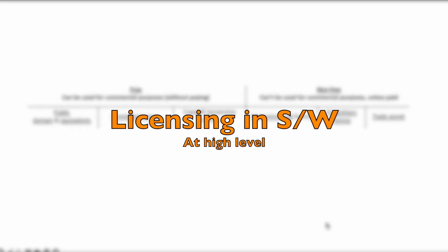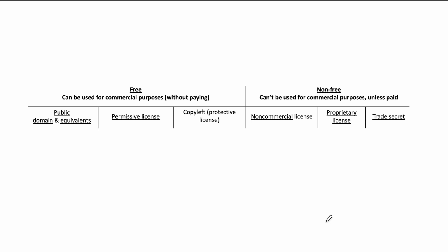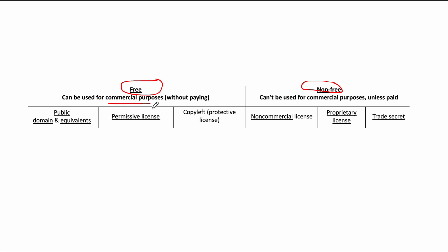In this video we are going to see different kinds of licensing which are possible in software — the free one and the paid one. The free, as the name says, you can use it for commercial purpose without paying anything.